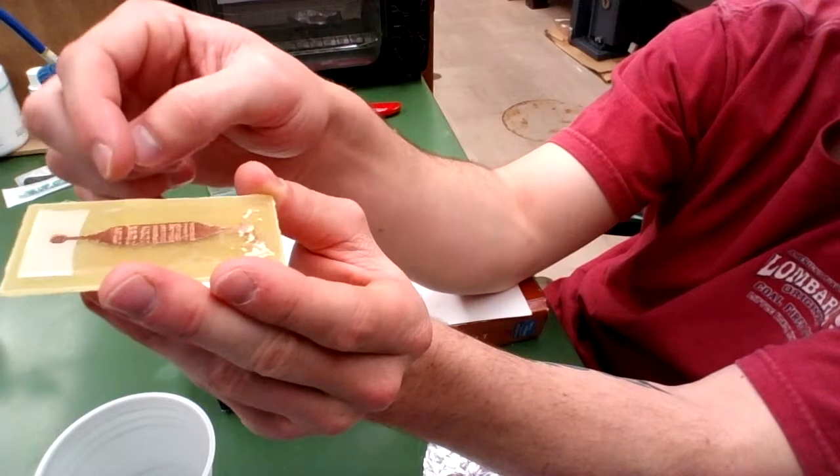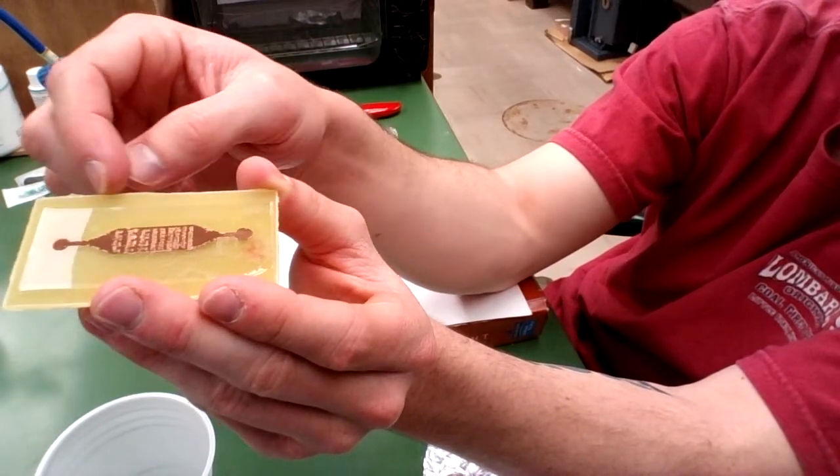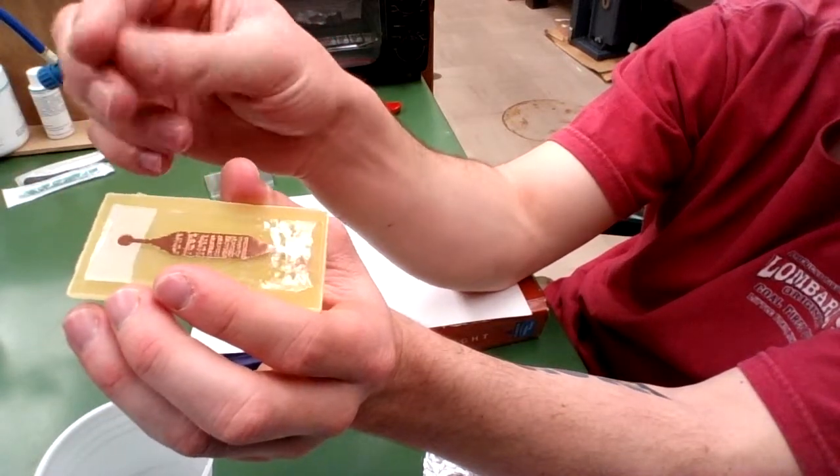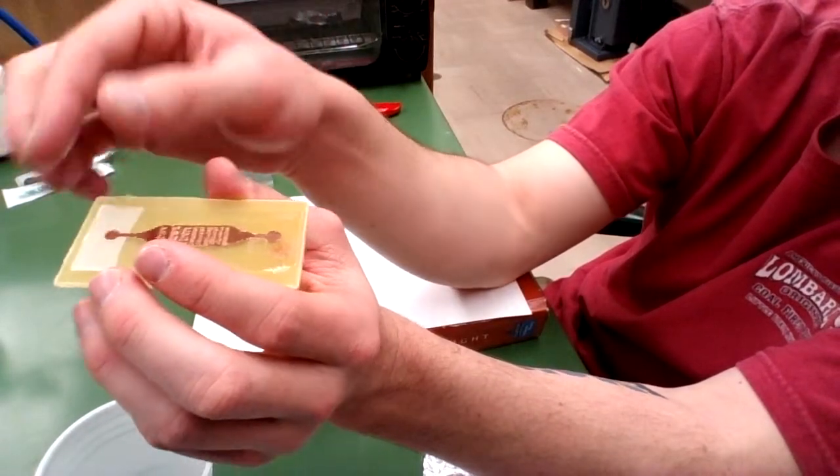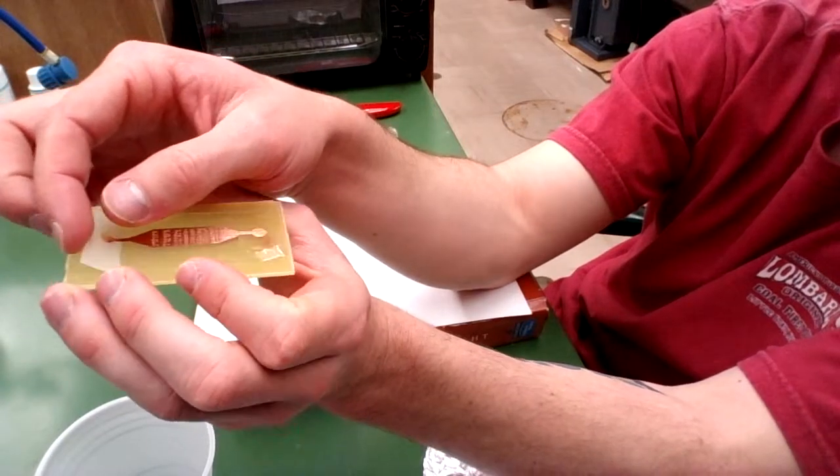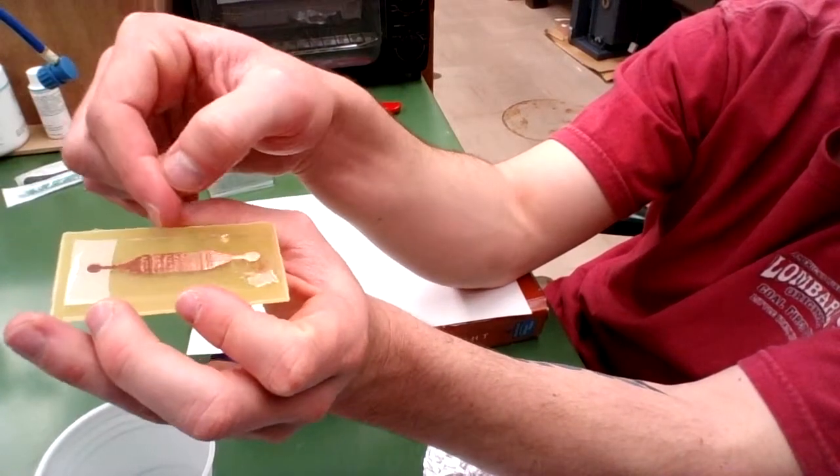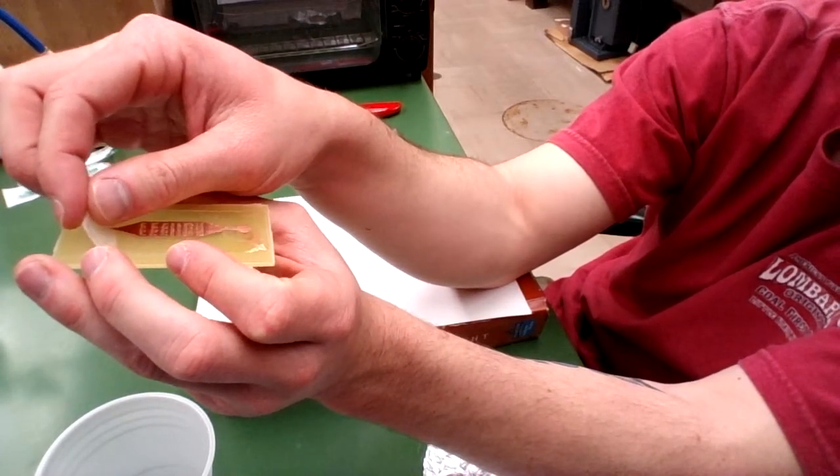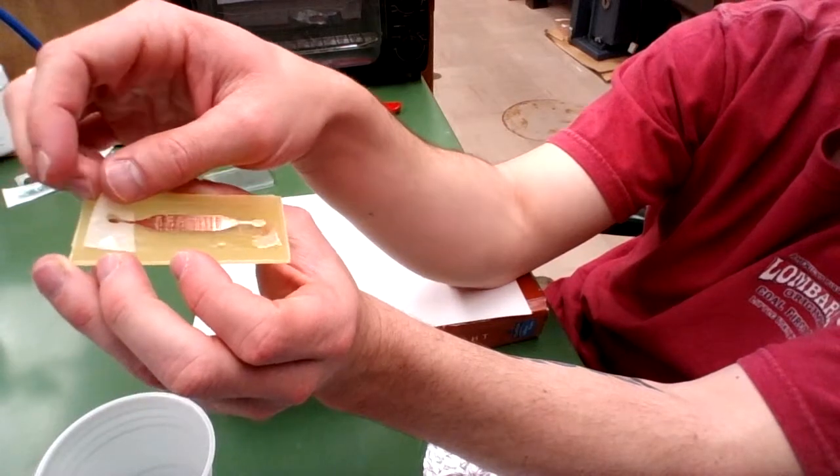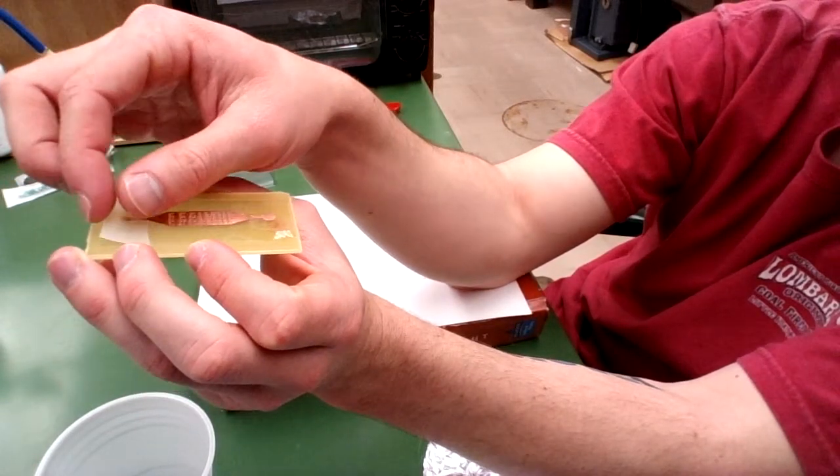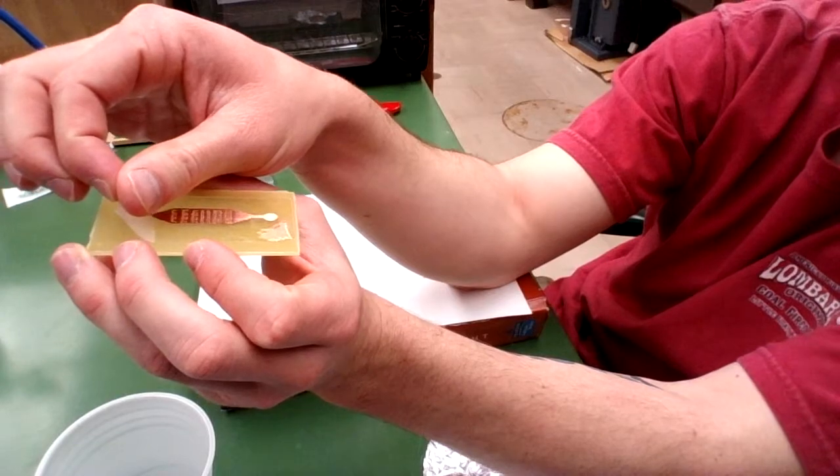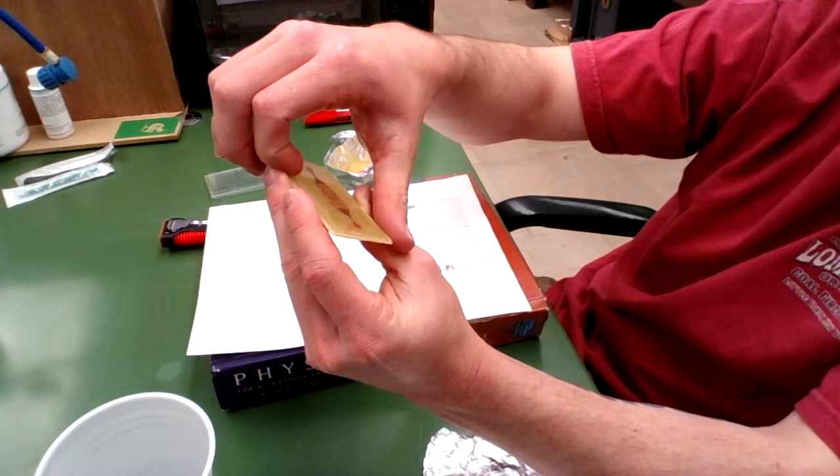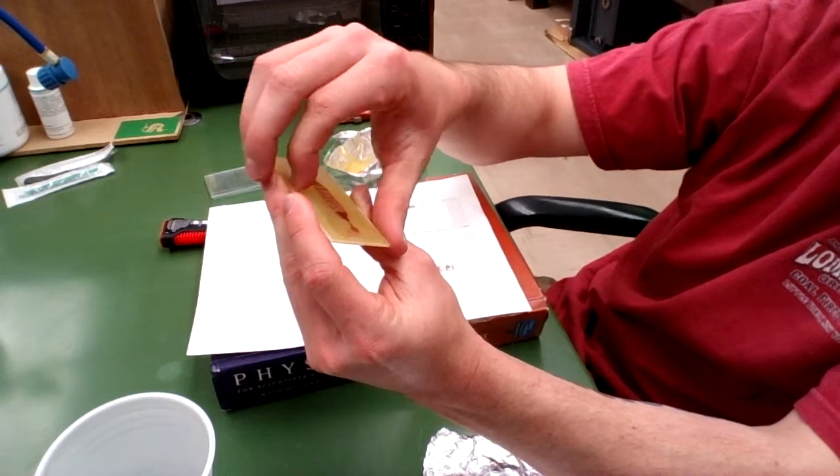Because the first time a printed circuit board is used for this process, it imparts this frosty layer onto the PDMS. I'm not exactly sure what it is, but if you are to reuse this PCB, this won't happen as dramatically. Making sure only to touch the sides of the device and not touch the bottom of the device, the part that will be in contact with our microscope slide.